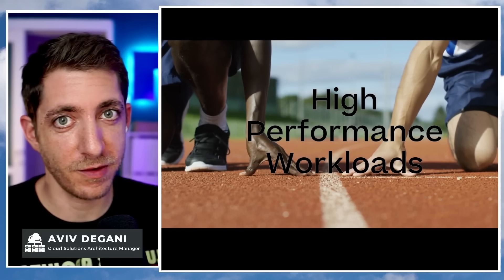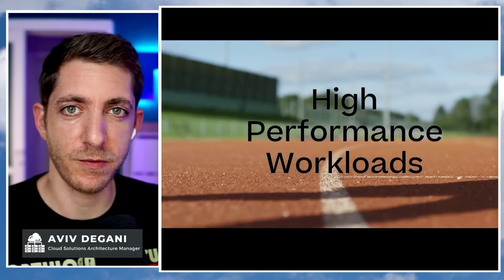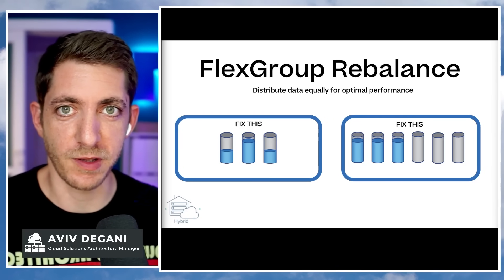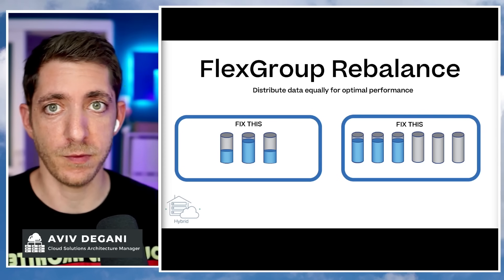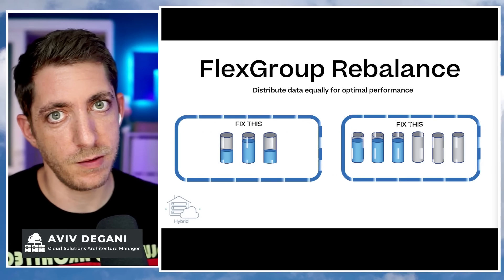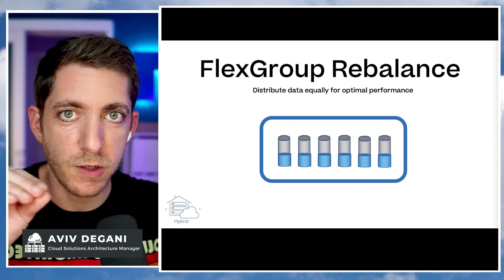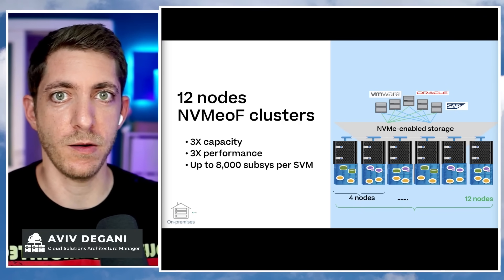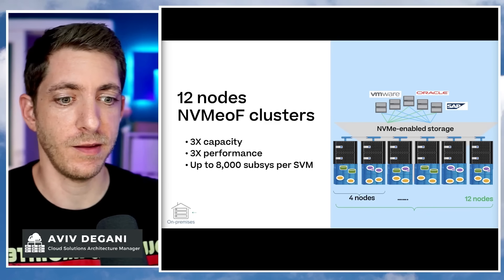Everyone loves performance, even if they don't need it. ONTAP has pretty unique performance capabilities on-premise, for the cloud, and for hybrid environments. FlexGroup is a great solution for a huge amount of data, a single namespace, or better CPU utilization for SMB shares. But sometimes it can create some imbalances that can affect your performance. So 9.12.1 is solving it with rebalancing across all the different members to make sure your performance tuning will be perfect. NVMe over Fibre Channel can now run on 12-node clusters with triple the amount of capacity and performance, and up to 8k subsystems per SVM.